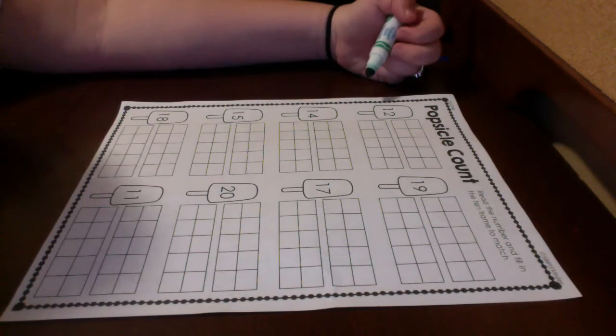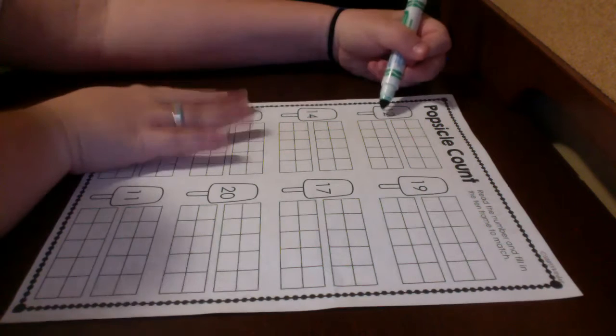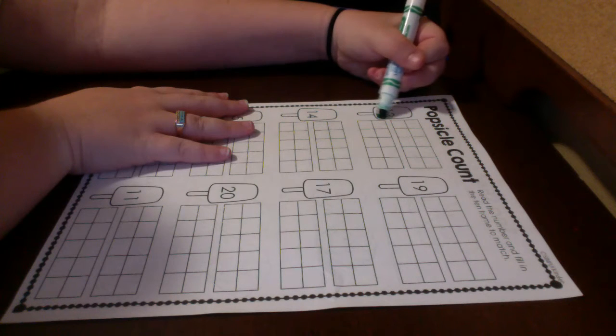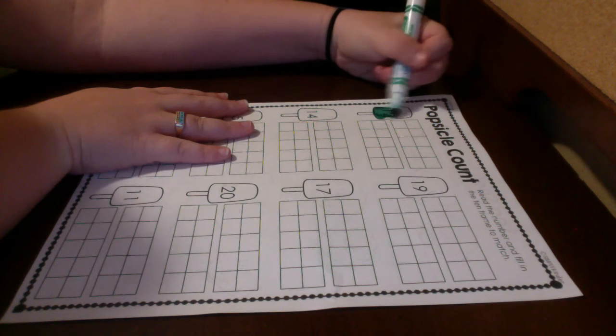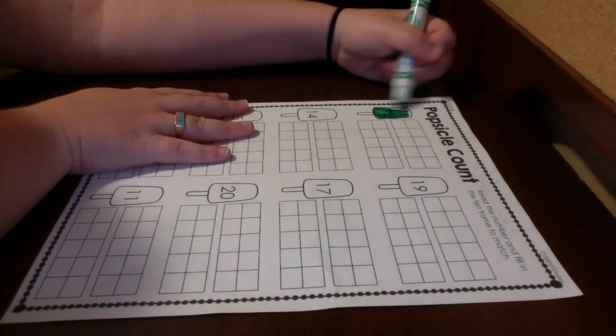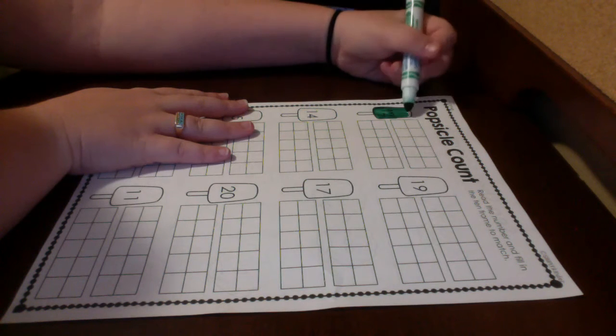What number is that? It's 12, so take whatever crayon you are going to color that popsicle stick and I want you to fill in the popsicle with the crayon you're going to color the 10 frames.